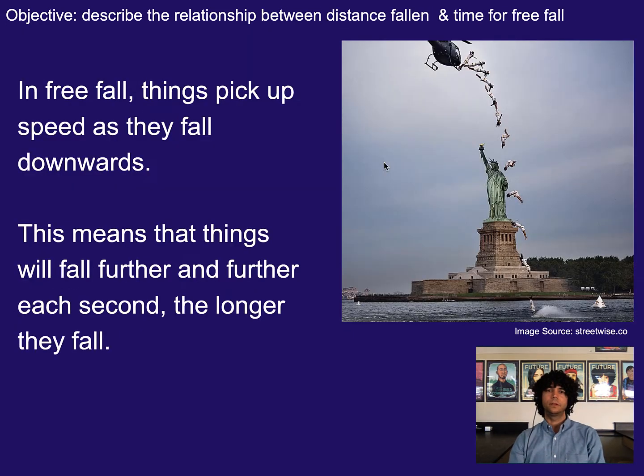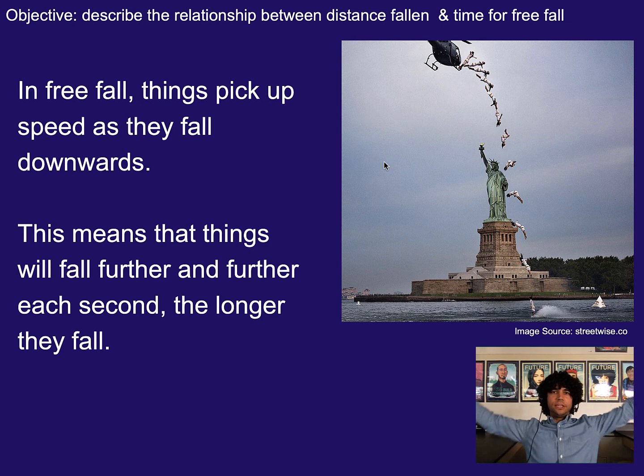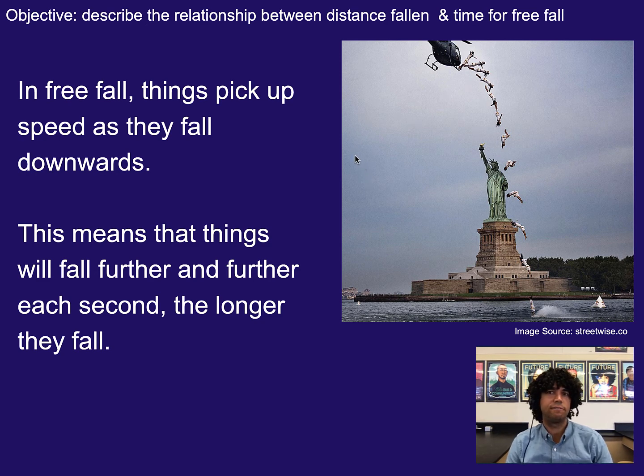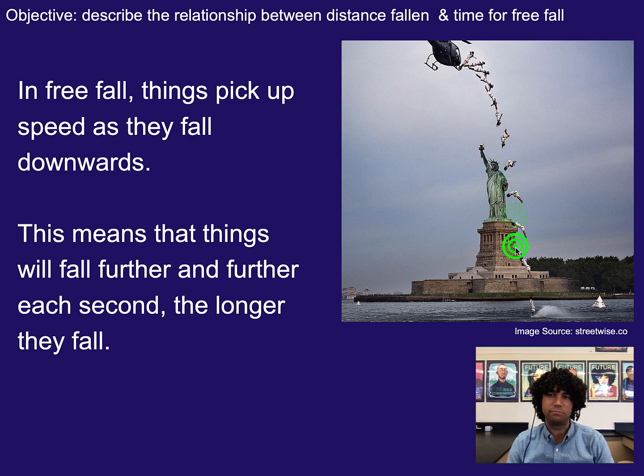All right. So in free fall, we said things pick up speed as they fall downwards. This means that things will fall further and further each second. So we've looked at velocity, now we're switching gears into position. If we look at this nice snapshot diagram or stroboscopic photography here, we can see that as the person falls, their distance that they cover each second, or really probably each 0.1 seconds in this case, is increasing, where how far they fall in the very beginning is much different than how far they fall at the very end.